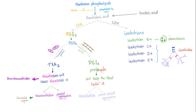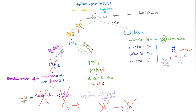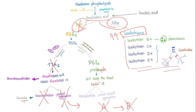Here is the arachidonic acid pathway. Aspirin inhibits the cyclooxygenase — no cyclooxygenase, no thromboxane A2, no vasoconstriction, no platelet aggregation. When there is no platelet aggregation, there is no blood coagulation. But since you have inhibited the cyclooxygenase, all of the arachidonic acid is being converted into leukotrienes. You have more leukotrienes than usual, and this is bad for asthma patients. That's why aspirin is bad for asthmatics.